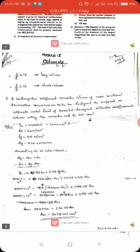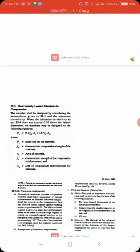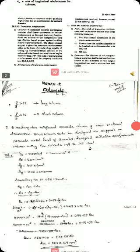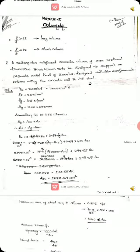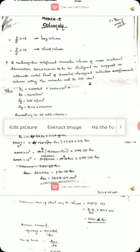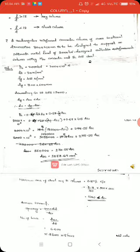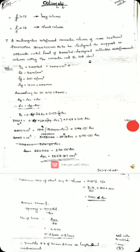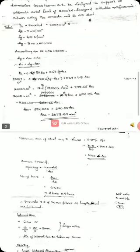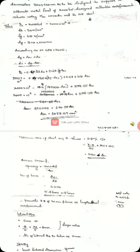From the above equation, PU equals 0.4 FCK AC plus 0.67 FY ASC. From this equation, we have to find ASC. From the above equation, ASC is equal to 2073.69 mm².